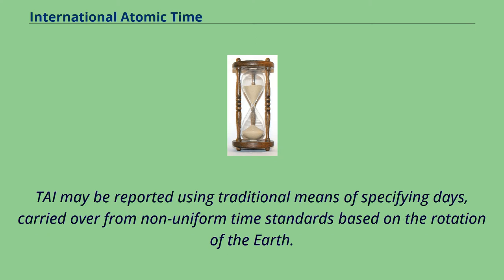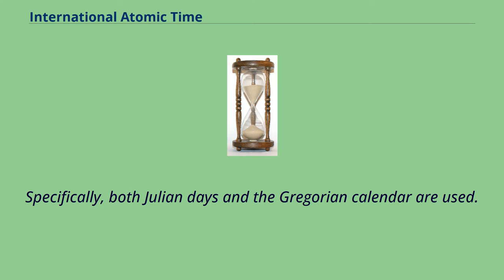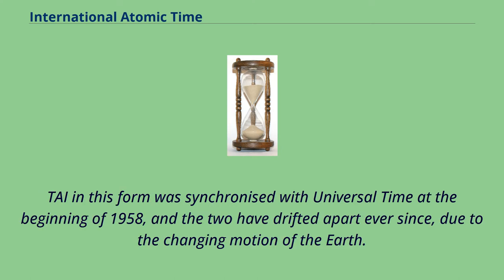TAI may be reported using traditional means of specifying days, carried over from non-uniform time standards based on the rotation of the Earth. Specifically, both Julian days and the Gregorian calendar are used. TAI in this form was synchronized with Universal Time at the beginning of 1958, and the two have drifted apart ever since, due to the changing motion of the Earth.